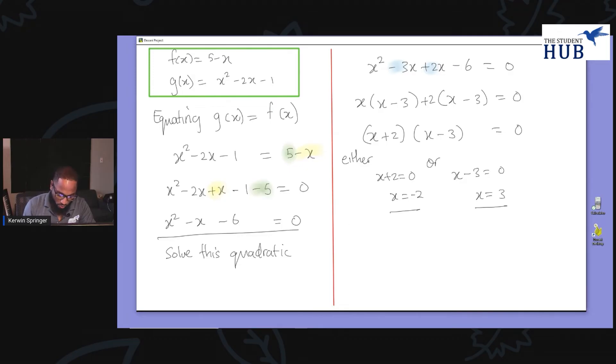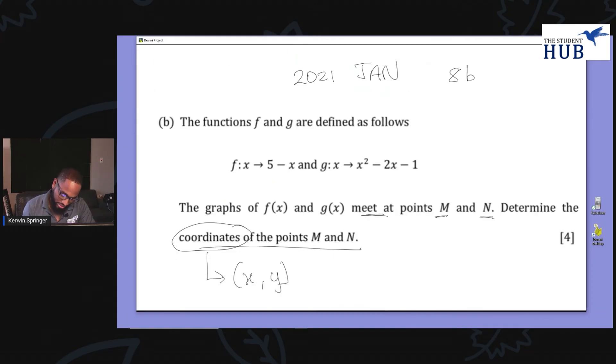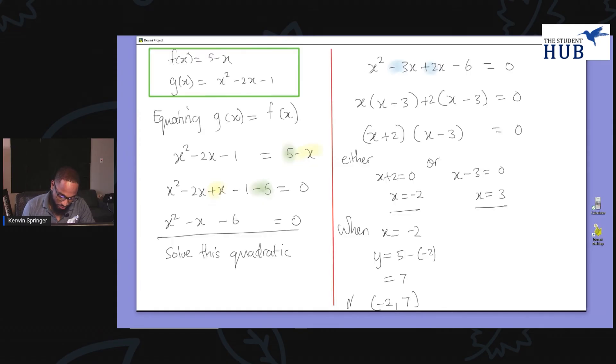Substitute, or I could say when—this is a technique we use—when x is equal to negative 2. And I can find out the y value by using any one of the f(x) or g(x). But obviously, I'm going to pick this one. Why do you think I'm going to pick the f(x)? I'm going to say y is equal to 5 minus negative 2, which is 5 plus 2, which is 7. So one of the points is negative 2, 7. And we can call that M. They didn't specify which one has to be M.